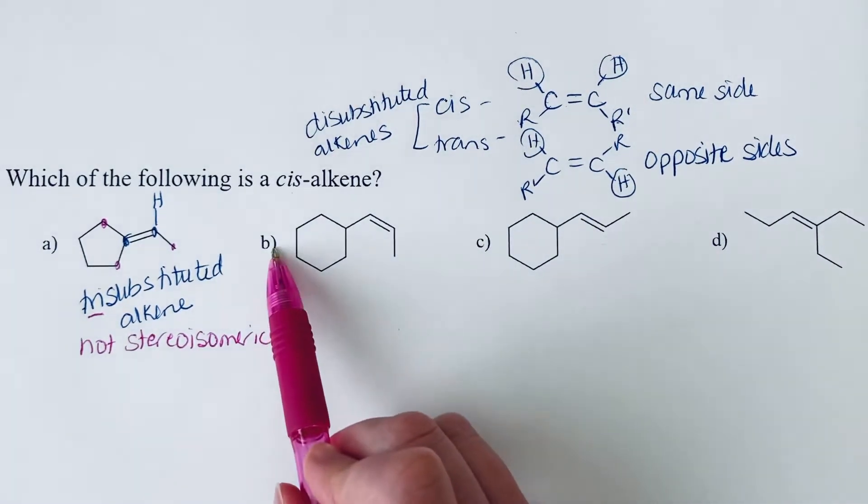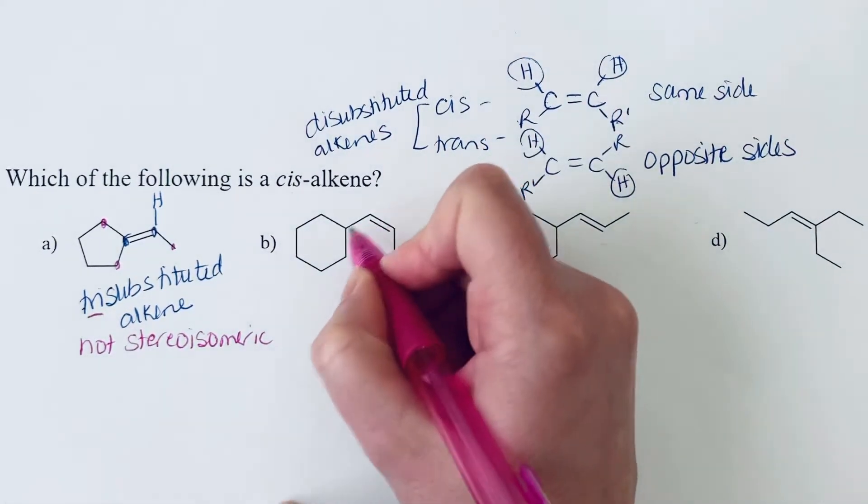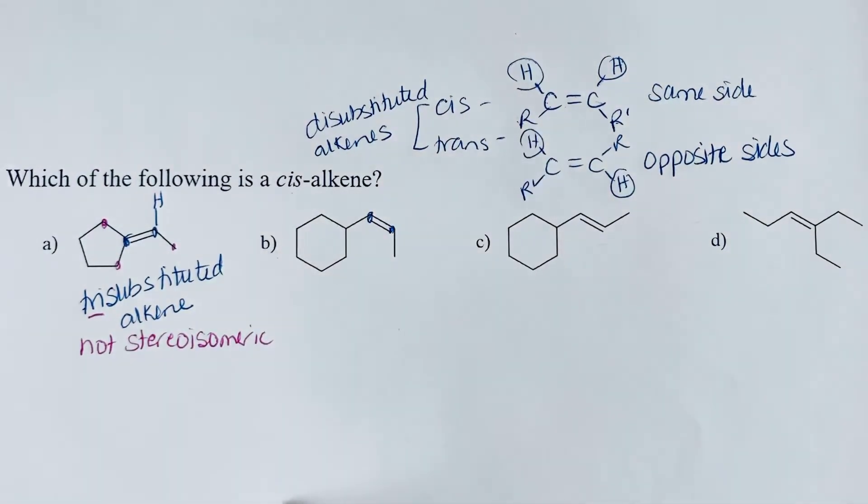Okay, so let's look at B. So we want to see where the hydrogens are in the alkene. So here's our alkene carbons. We can see two bonds to substituents. So this is a di-substituted alkene.